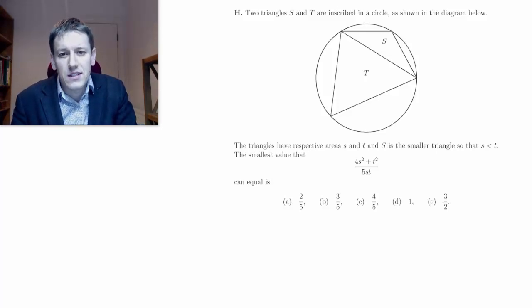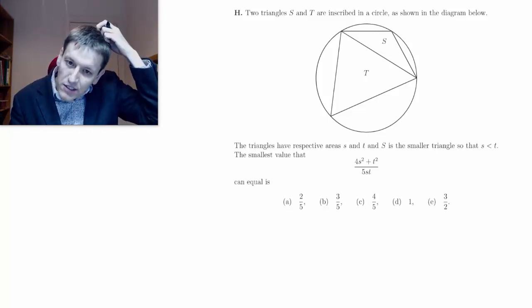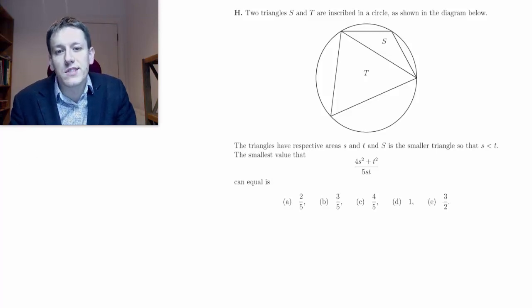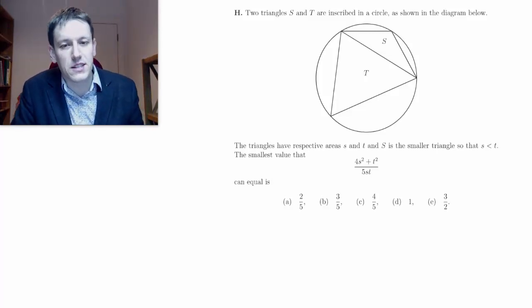It says that the area of capital S is little s and the area of capital T is little t. And we've got that the area of the triangle s is smaller than the area of the triangle t. And we want to know what's the smallest value that this expression 4s squared plus t squared over 5st can take.